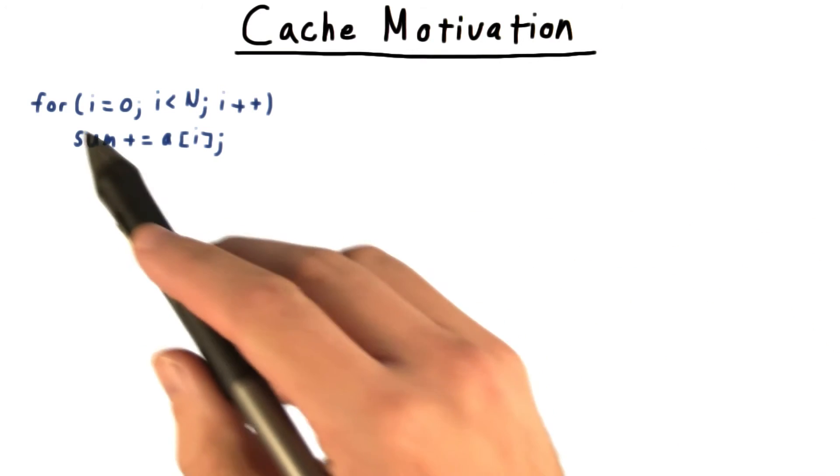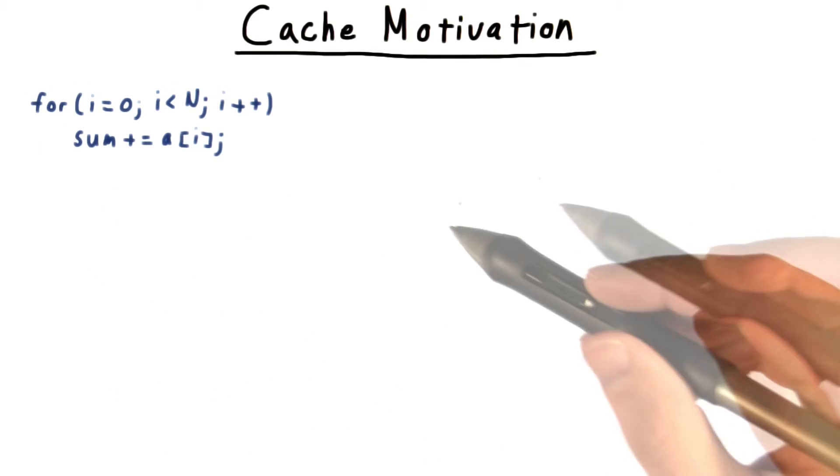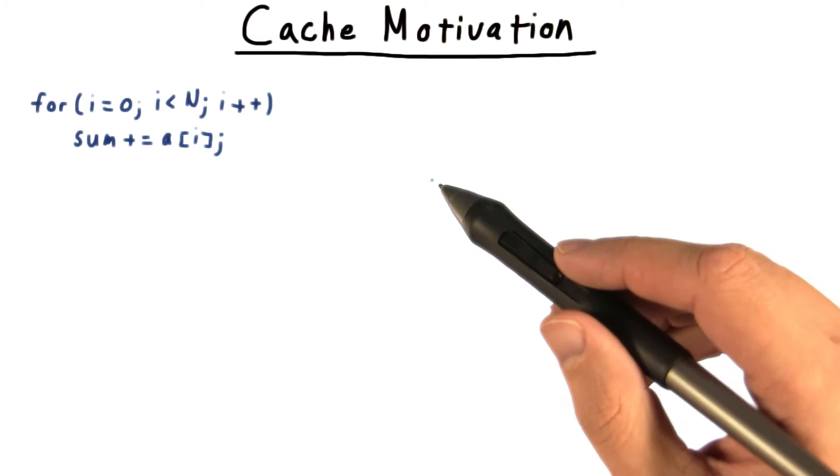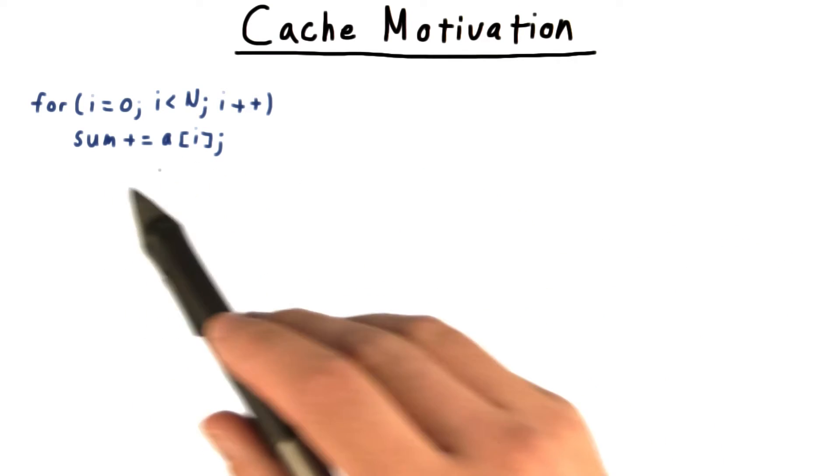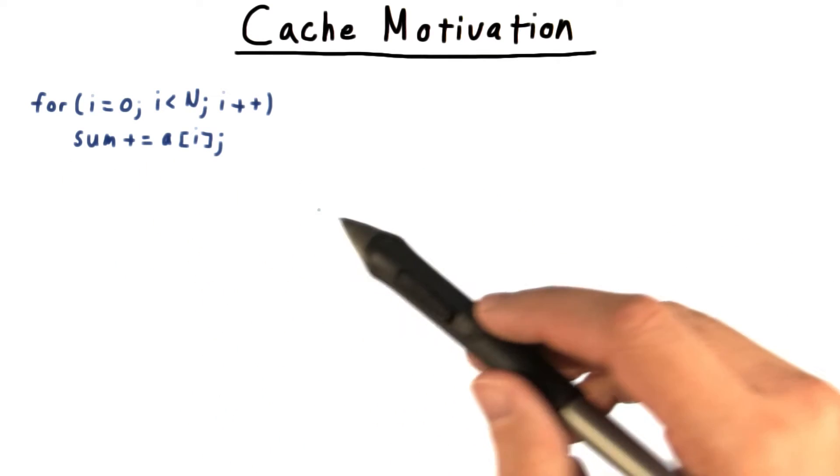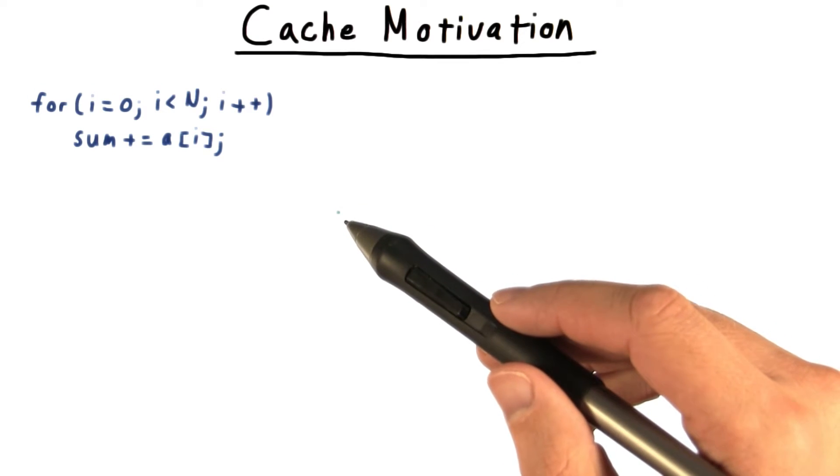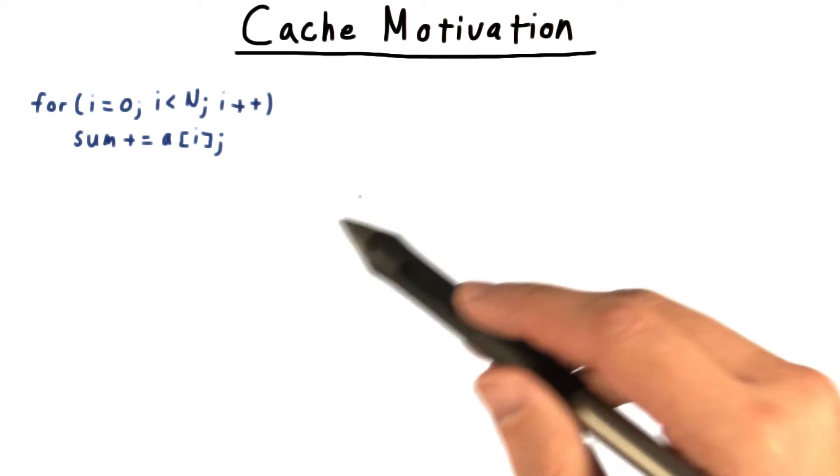To help us see the need for caches, we'll examine this little snippet of code. From an application program's perspective, a statement like this one, sum plus equals a of i, would seem to happen in one step. Even in assembly, it would only take a few instructions.